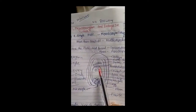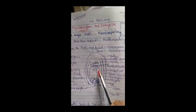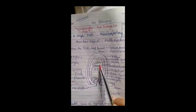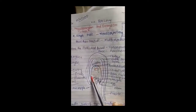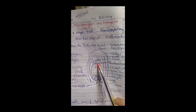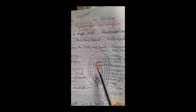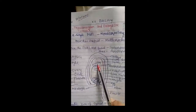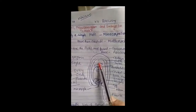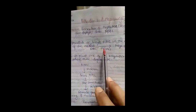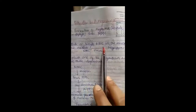Where does megasporogenesis happen? In an earlier video, we discussed the structure of the ovule. Inside the ovule is a nucellus. The nucellus is full of cells in a growing condition. One of the cells of the nucellus is bigger, enlarged, and differentiated as a single MMC — megaspore mother cell. One of the cells of the nucellus is enlarged and acts as the megaspore mother cell.